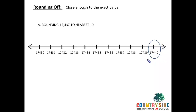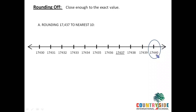Are you getting it, students? Suppose there is a person standing here — let's say place A. There is a person standing at C, and there is a person standing at B. Now B has to reach any of the persons in the shortest time, so where will he go? Obviously he'll go to the nearest person, that is C. So this number is closer to 17,440. Hence the answer will be 17,440. We have increased the value from 437 by 3 points and made it 17,440, so this means we have rounded up.